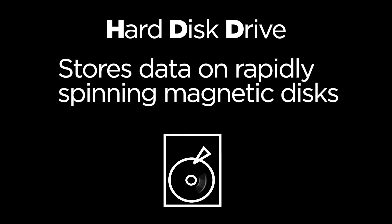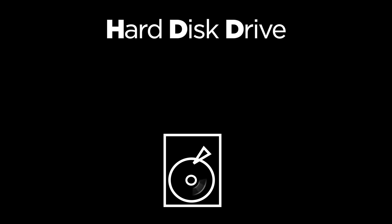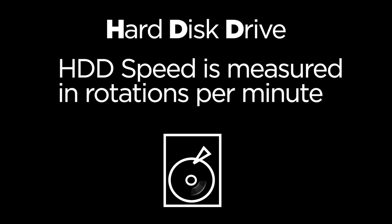Data can be stored on two types of long-term storage devices: HDDs or SSDs. An HDD, or hard disk drive, is a data storage device that uses magnetic storage to store and retrieve digital information using rapidly spinning disks coated in magnetic material. Hard disk drive speed is measured in RPM, or rotations per minute.